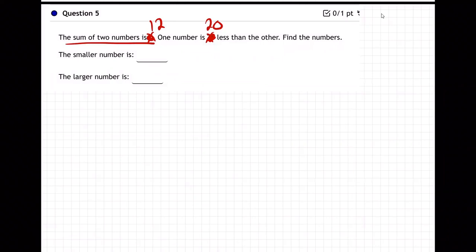Okay. So first thing we do, the sum of two numbers is 12. That means X plus Y equals 12, right? The sum, they add up to be 12. So I just add them up, it equals 12. Sum means add.